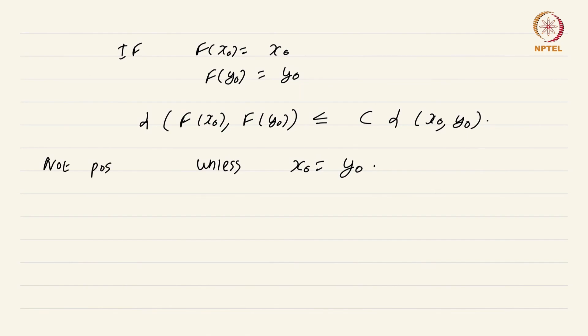This shows that there can be at most one fixed point. We have shown that for a contraction there can be at most one fixed point — here completeness is not needed; whenever you have a contraction there is at most one fixed point. This concludes the proof of the Banach fixed point theorem. We will soon see how to prove the inverse function theorem using it. In the next video I am going to motivate the proof of the inverse function theorem using Newton's method, which is often used as a substitute for the Banach fixed point theorem.